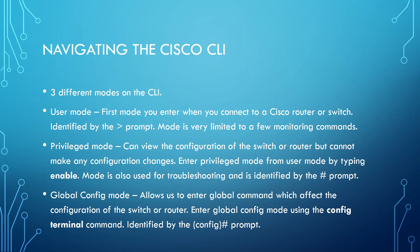Now because we're going to be working with the Cisco CLI a lot — especially in the CCNA series as we're configuring routers and switches — let's understand how to navigate the Cisco command line interface. When you first connect to a Cisco device, the first mode you're presented in is user mode. User mode is identified by the greater-than prompt. This mode is very limited — you can't do any configuration or much troubleshooting. Maybe a tiny bit of monitoring like checking the version, but that's about it. You won't be working in this mode a lot.